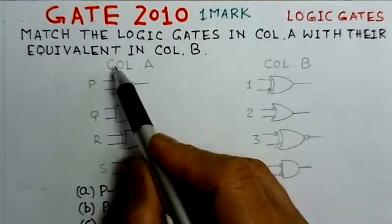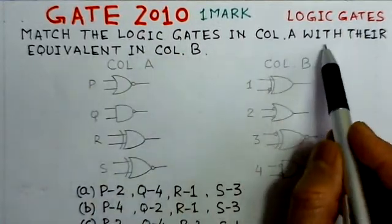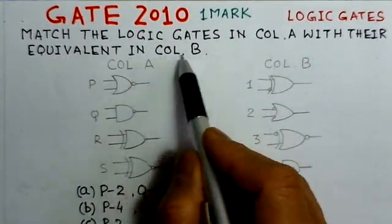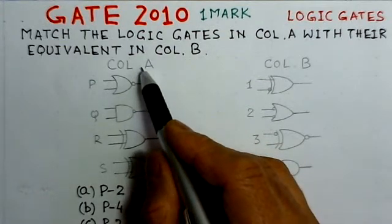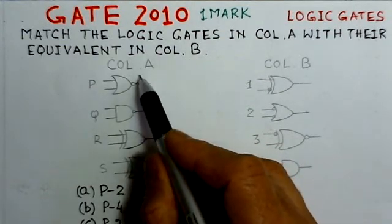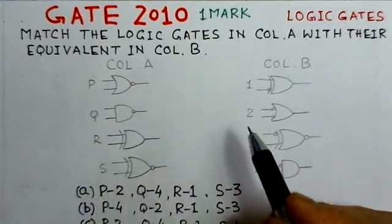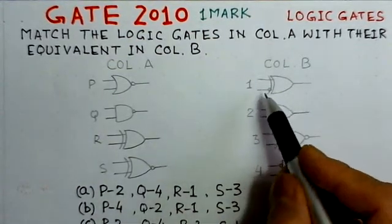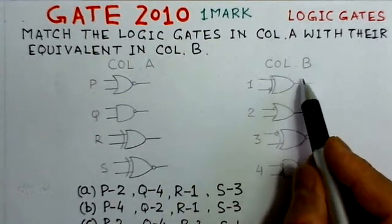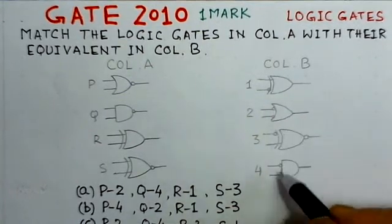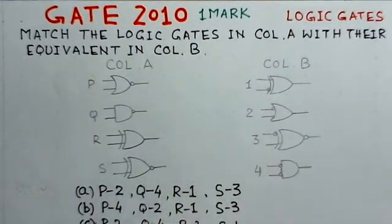The problem says match the logic gates in column A with their equivalents in column B. In column A, there are four gates given: P, Q, R, and S. We have to find which is the corresponding gate in column B of these 1, 2, 3, 4, and these are the corresponding options here.